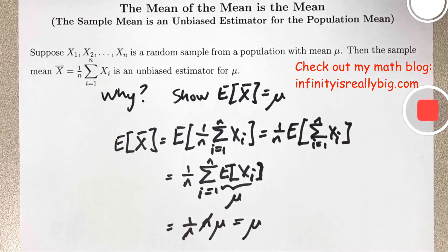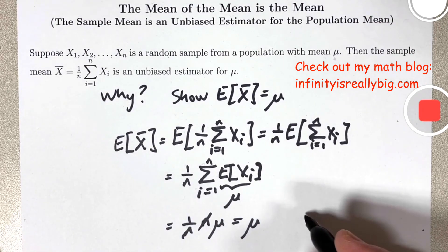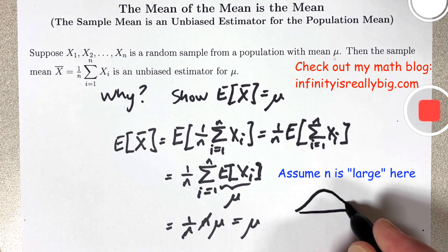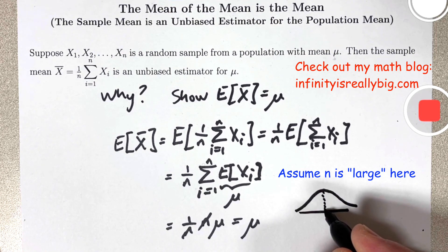The sample mean x-bar is an unbiased estimator for the population mean mu. This means that the observed values of the sample mean x-bar do not tend to systematically overestimate or underestimate mu. The sampling distribution of the sample mean, which looks like a normal curve because of the central limit theorem, has a center of mass at the population mean mu.